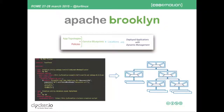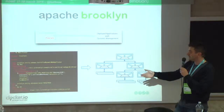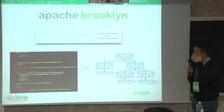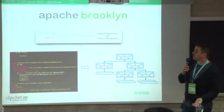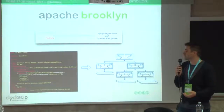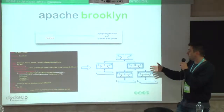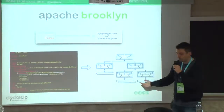This is the basic schema: you have the service blueprint, which together with the location will turn the blueprint into a deployed application. On the left-hand side you can see a blueprint — in this case a simple YAML file which follows a standard called the OASIS CAMP specification — and by passing that to Brooklyn you will have the deployment of your application.